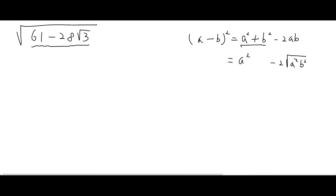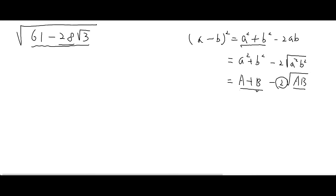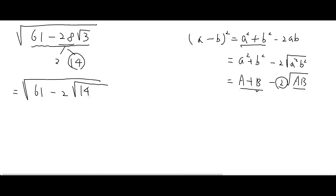Even though I write A² and B², you can say A + B minus 2√(AB). We're going to rewrite the expression and find capital A and capital B, where the sum equals 61 and the product equals something. But this has a factor of 2, so we're going to use that 2. We ignore the negative sign and use √14 — so this becomes √(61 − 2√(14² × 3)).